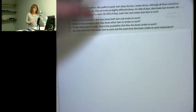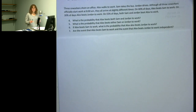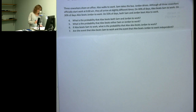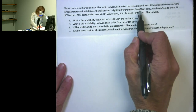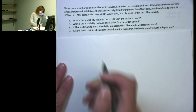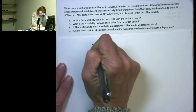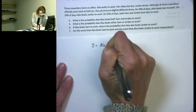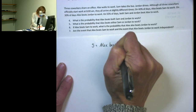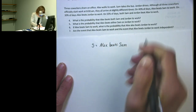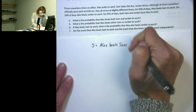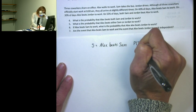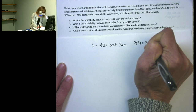There are a series of questions about probabilities of these events. When faced with a situation like this, I like to start by drawing a Venn diagram and then use that to answer the questions. I'm going to call S the event that Alex beats Sam to work, and the probability of S is 0.40.